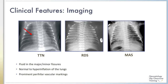There can also be prominent perihilar vascular markings in some patients. The center chest x-ray demonstrates air bronchograms, hypoinflation, and a homogeneous ground glass appearance to the lung fields, most consistent with respiratory distress syndrome. The chest x-ray on the far right shows heterogeneous lung disease with areas of atelectasis and hyperinflation, most consistent with meconium aspiration syndrome.